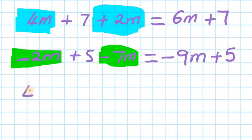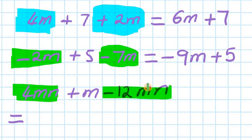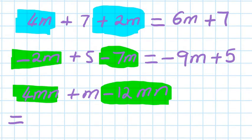This one here: 4mn plus m minus 12mn. First of all, you look for like terms. The like term is mn, so which is 4mn and minus 12mn. So 4 minus 12 — 12 minus 4 is 8, so therefore 4 minus 12 must be minus 8. So negative 8mn. The plus m — just write it down, plus m.